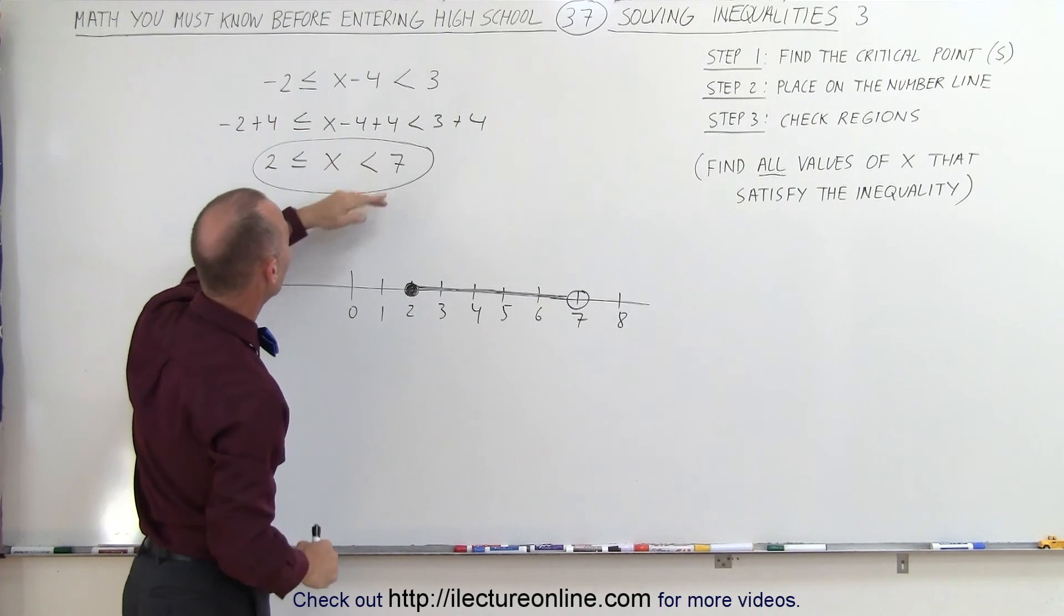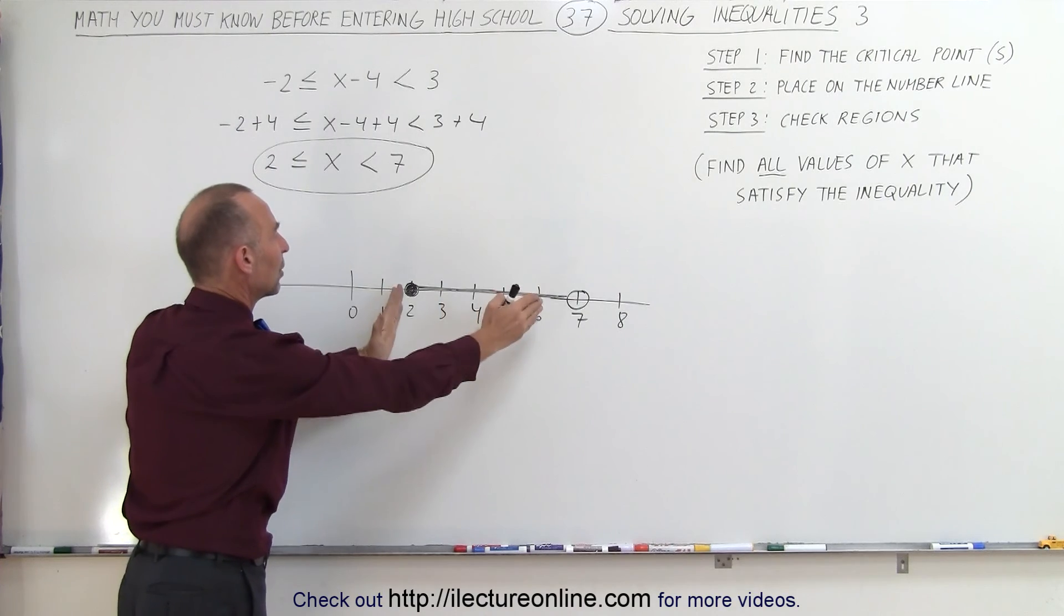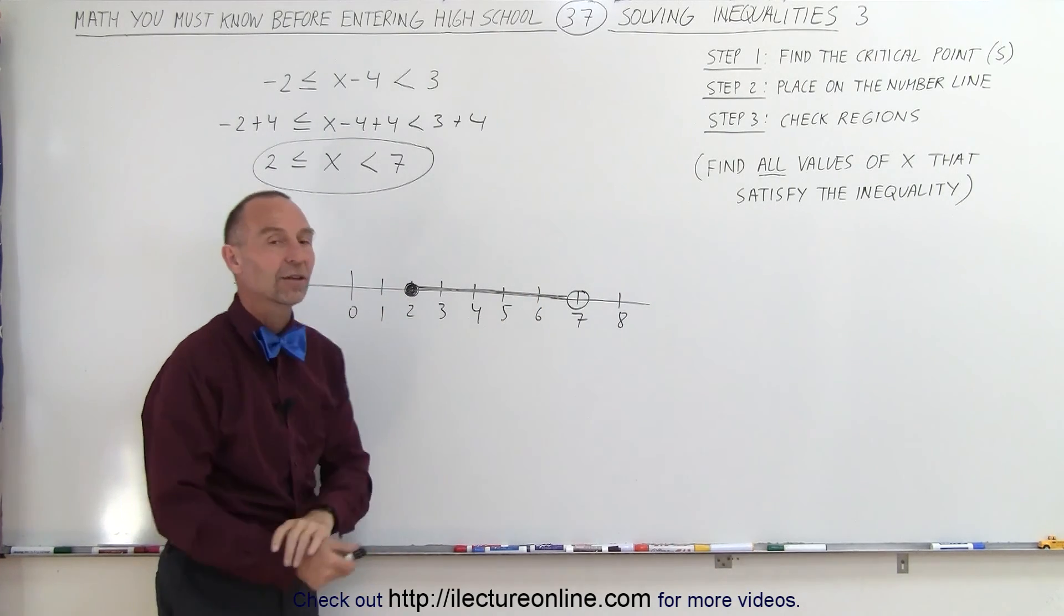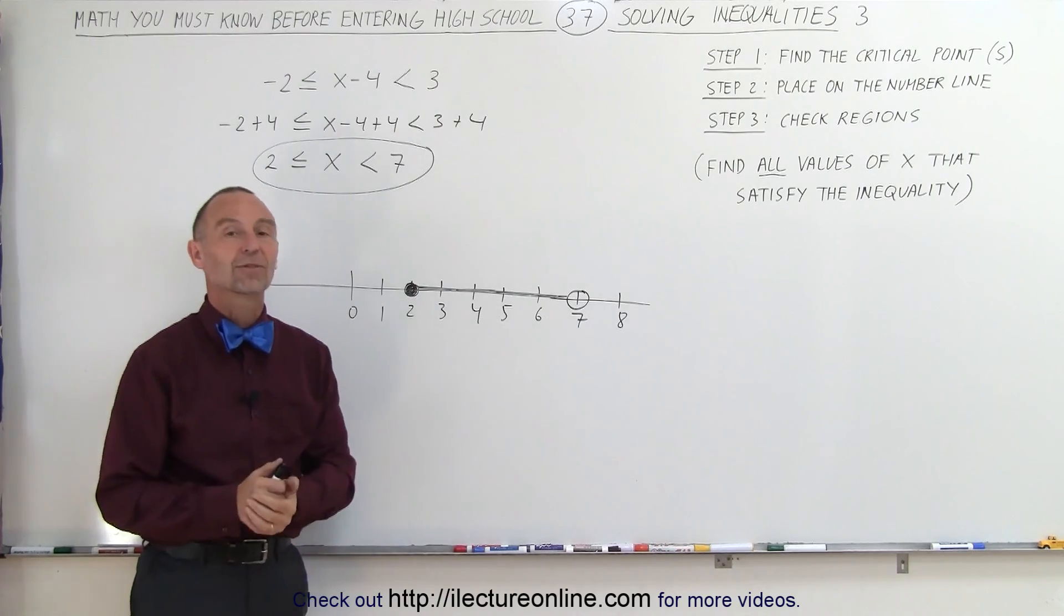Adding 4 to every portion of the inequality, isolating x between the two inequality symbols, and then we realize that that's the answer, the values between 2 and 7. And that's how it's done.